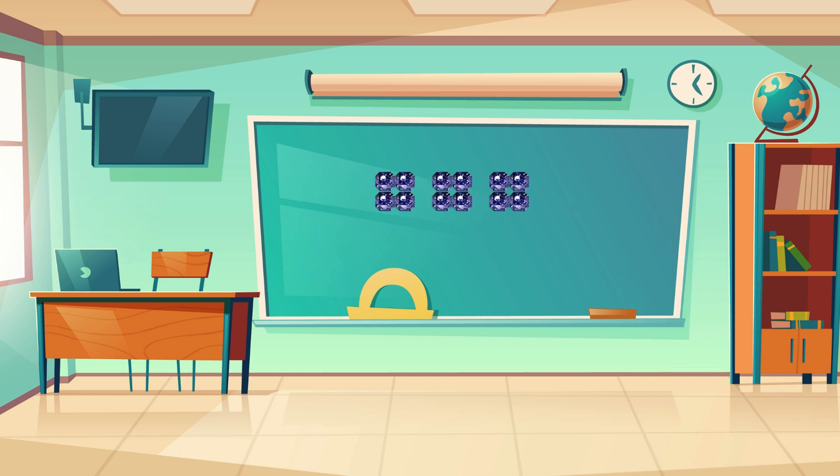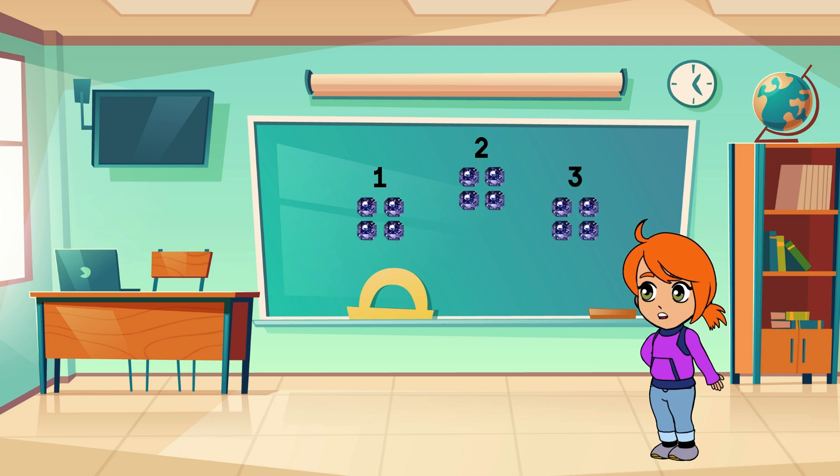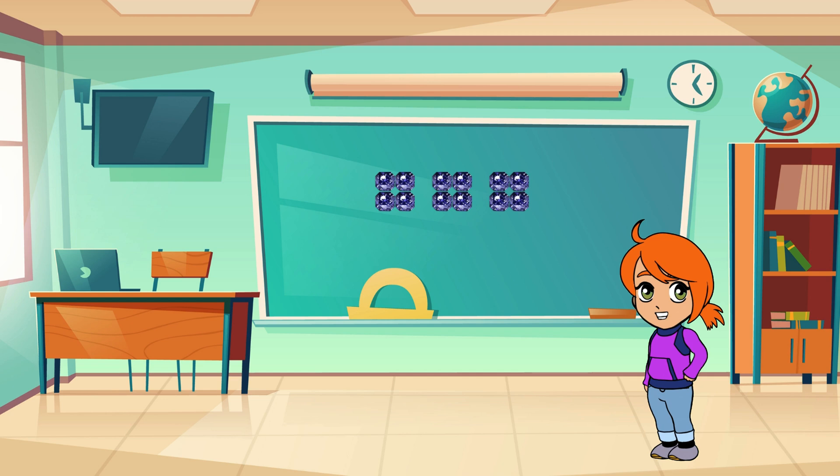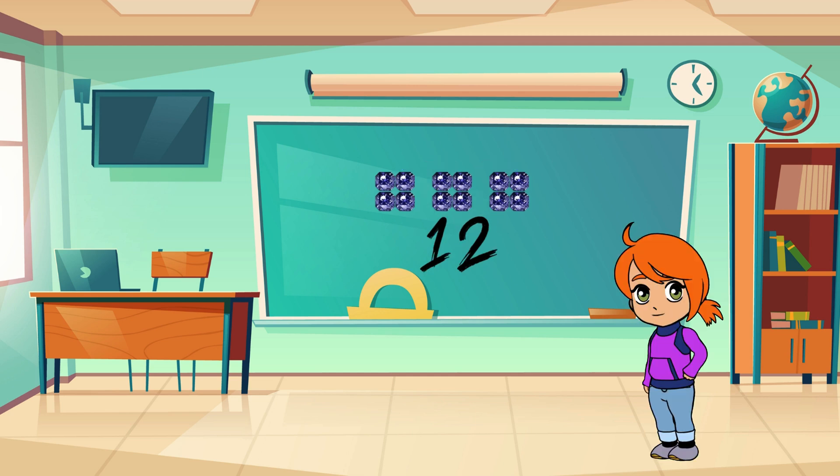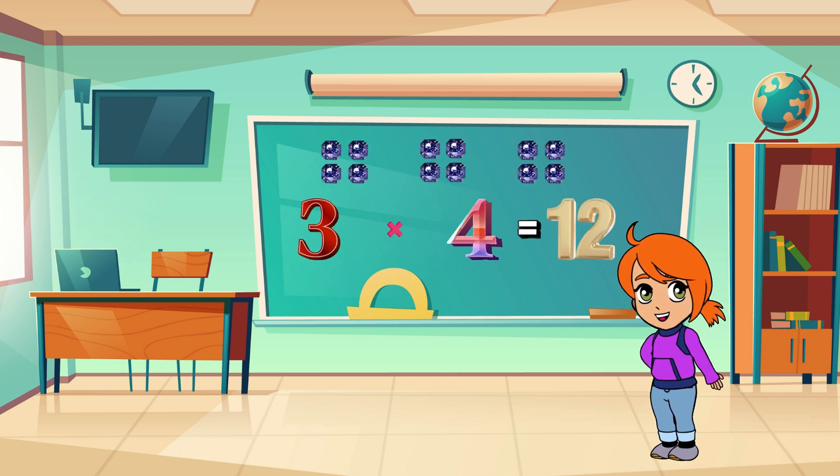Now let's practice together. Alright, let's solve this one together. We have three groups and each group has four items. Let's count the total number of dots. 4, 8, 12. So 3 times 4 equals 12.